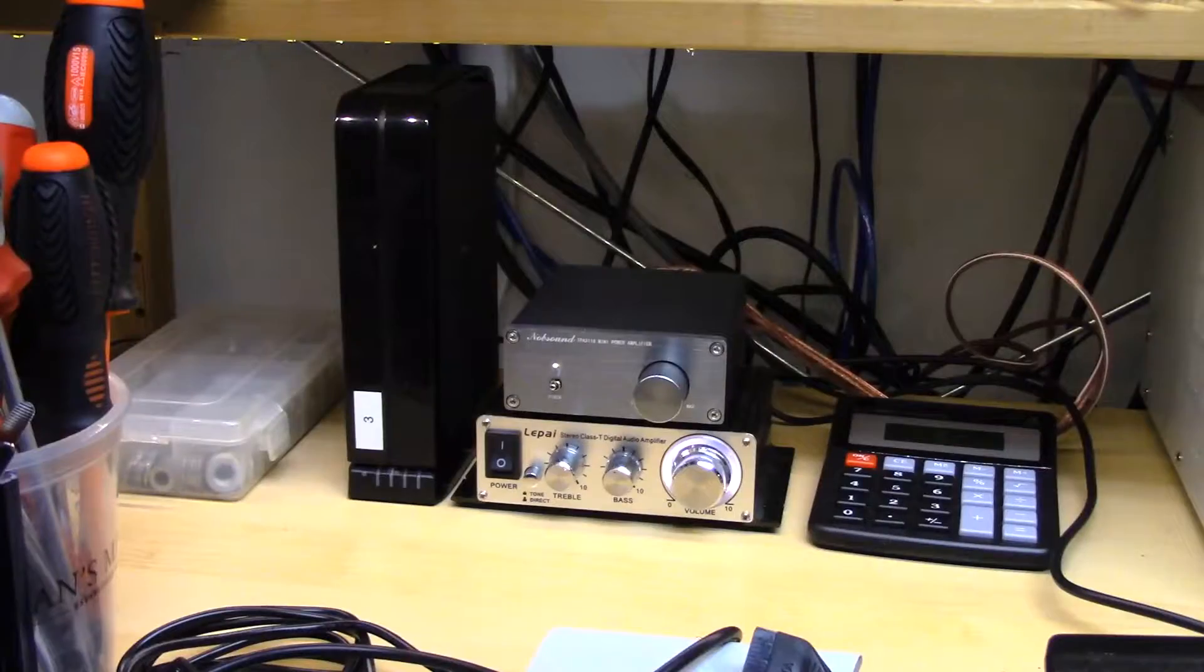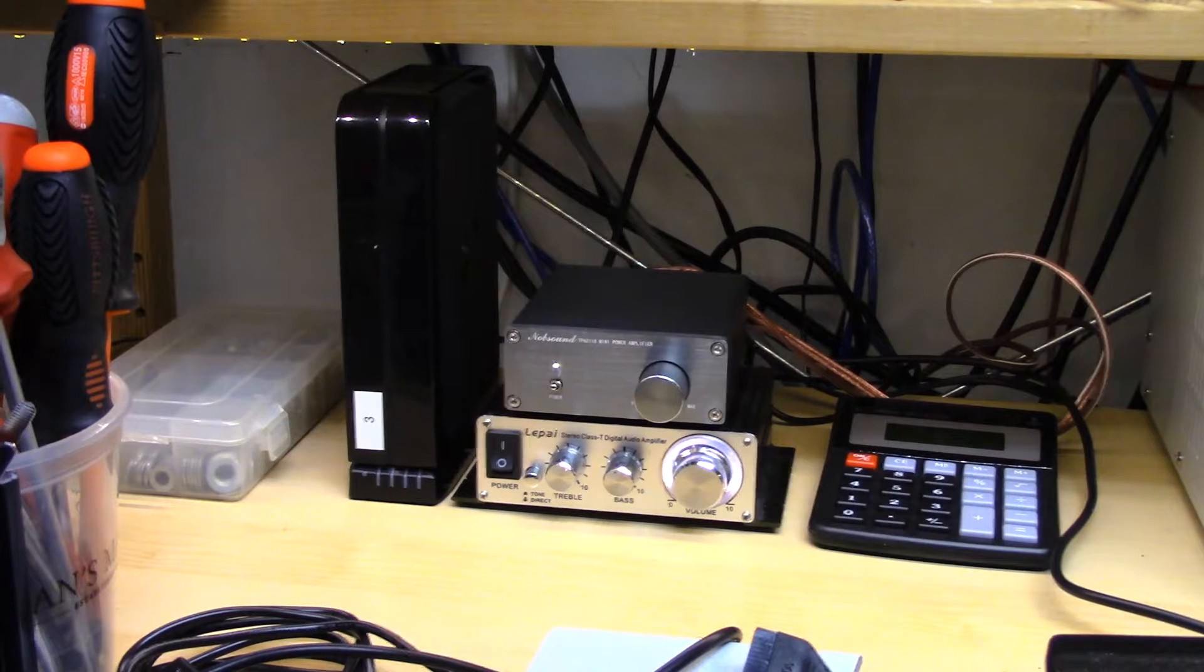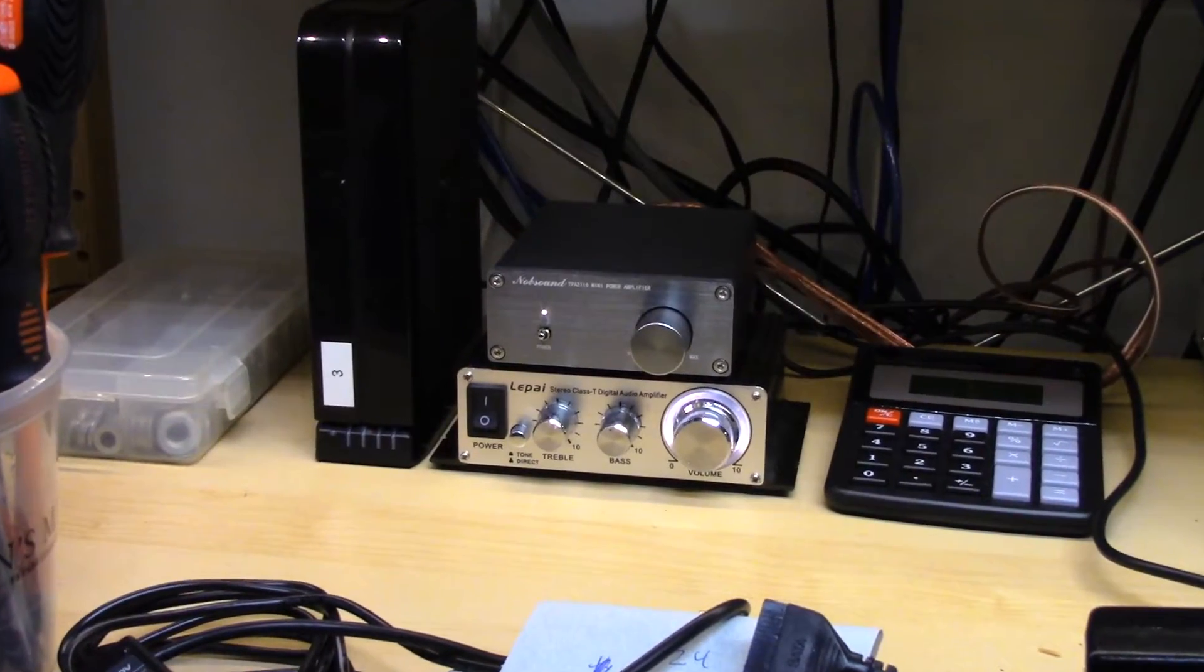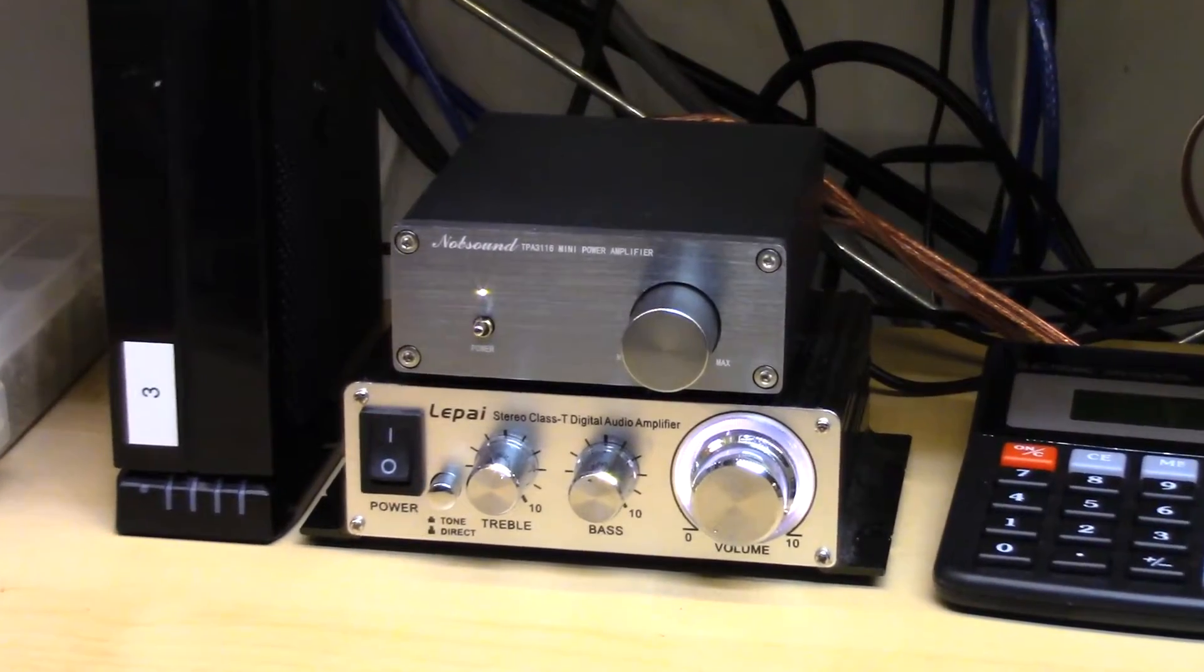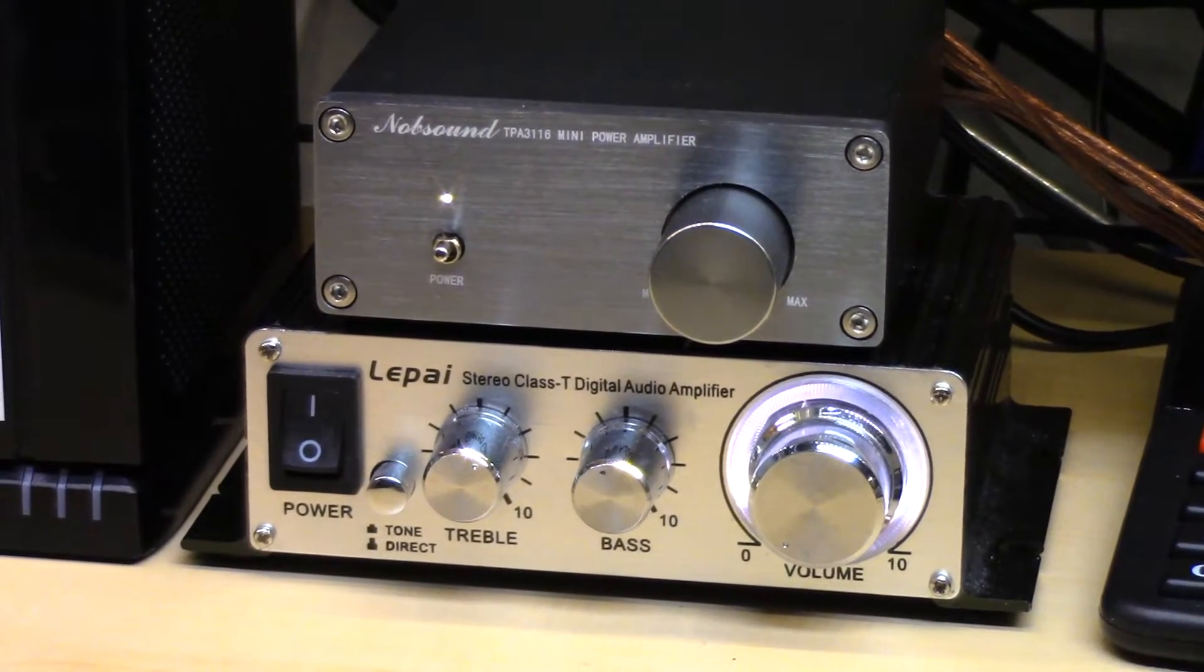Well, there it is - the Knob Sound, worst name ever, or Breeze Audio TPA 3116 mini amplifier above the venerable LePai 2020 Plus. Obviously the new one looks a billion times nicer. The build quality is just amazing comparatively.